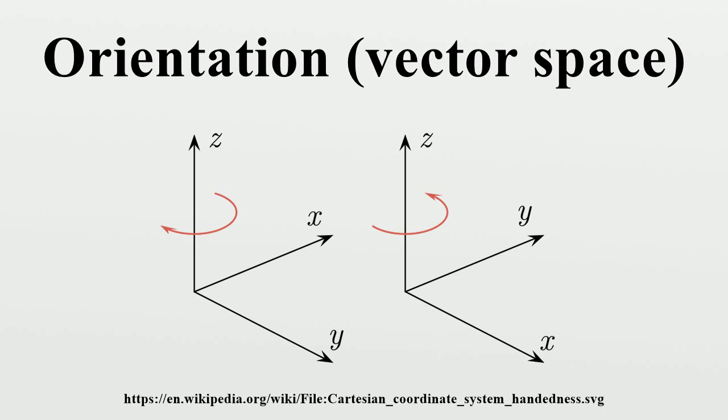Alternate viewpoints: Multilinear algebra. For any n-dimensional real vector space V we can form the kth exterior power of V, denoted λk(V). This is a real vector space of dimension n choose k. The vector space λn(V) therefore has dimension 1. That is, λn(V) is just a real line.